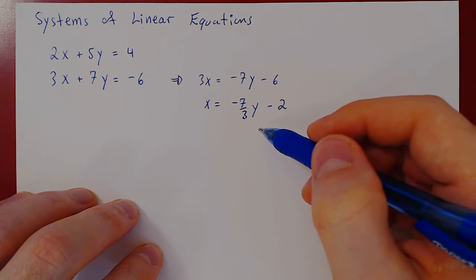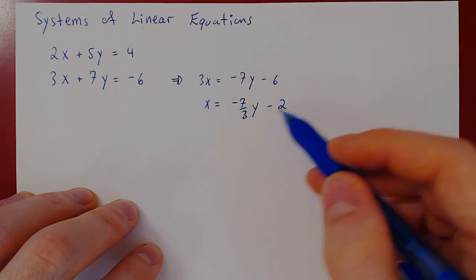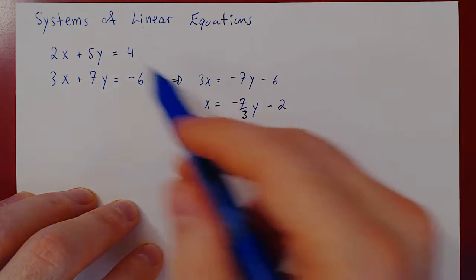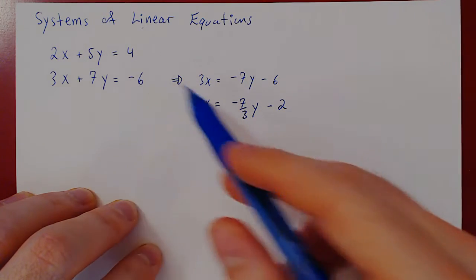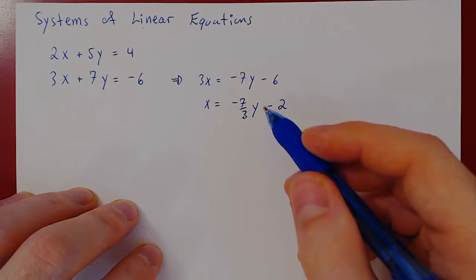So now we have that the second equation is equivalent to x being negative 7 over 3y minus 2. We can now make a substitution. We can replace in the first equation x by this function of y, which will now give us a unique equation as a function of one variable. This will allow us to solve for y.